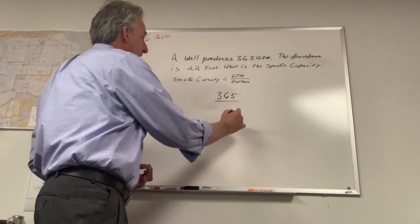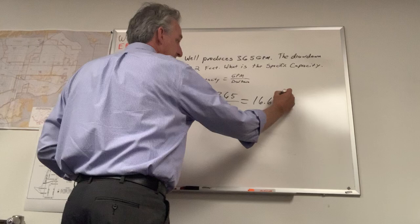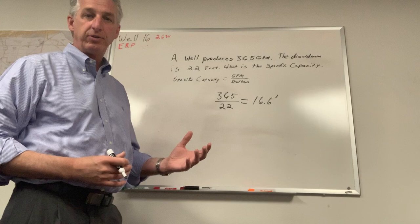We divide that by the foot of drawdown, which in this case is 22 feet. 365 divided by 22 gives me 16.6. So what this tells me is that for every foot of drawdown, I'm getting 16.6 gallons.